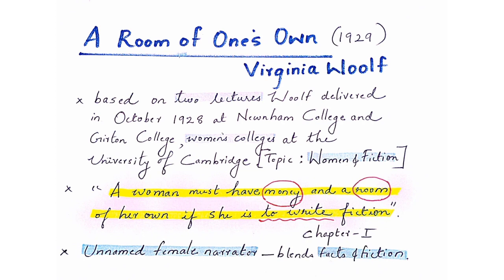Before moving into the essay, we should talk about the narrator. The narrator of A Room of One's Own is not Virginia Woolf herself — it is an unnamed female narrator. We do not know who this narrator is; she keeps describing various experiences but her identity is withheld. Woolf uses this unnamed narrator because she wants to emphasize that this female character could be any one of us, not only Woolf or one particular character. It could be any woman, giving the narrative universality.